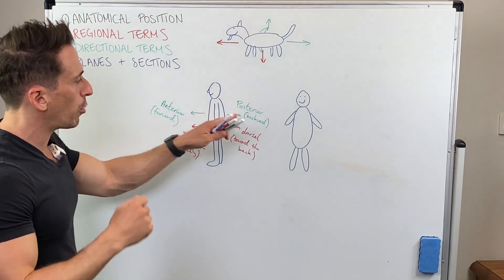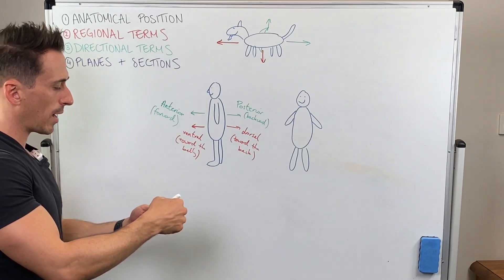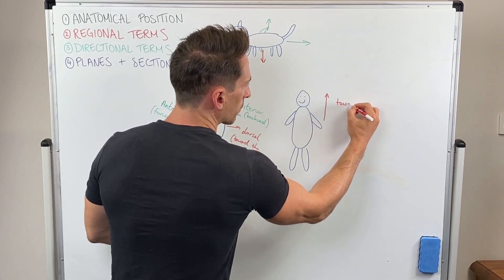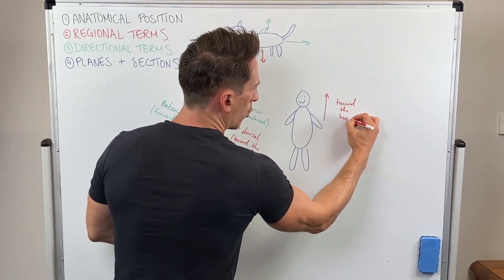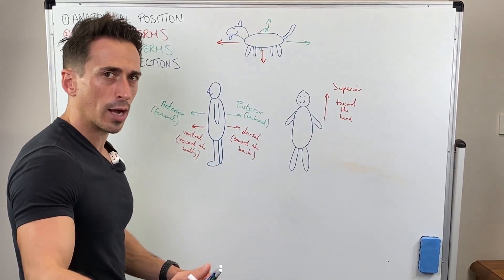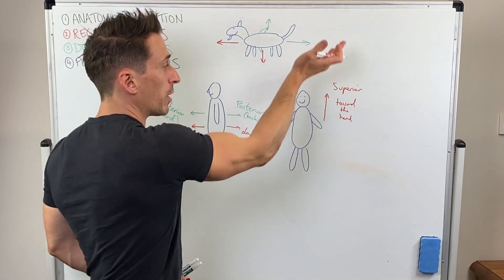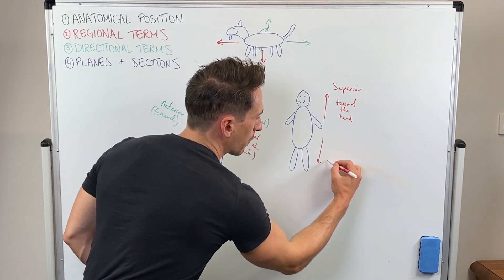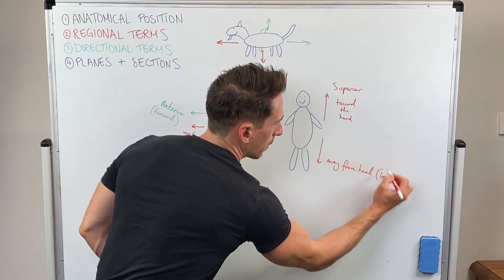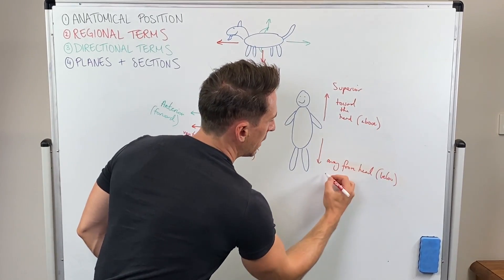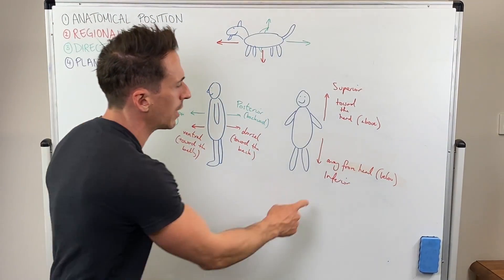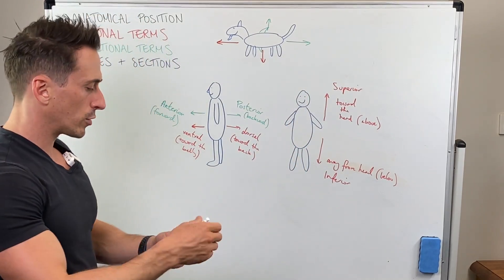So we've got anterior and ventral, posterior and dorsal. What's another one? Superior and inferior. Superior is towards the head — higher up. If somebody is your superior, they're higher up. Inferior means below or away from the head. So if somebody is inferior to you, they are below you.